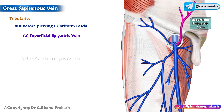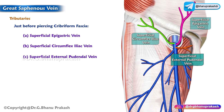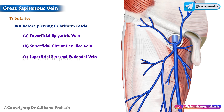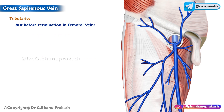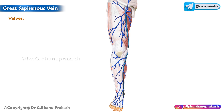Just before the long saphenous vein pierces the cribriform fascia, it receives the following tributaries: the superficial epigastric vein, the superficial circumflex iliac vein, and the superficial external pudendal vein. These veins accompany the corresponding superficial branches of the femoral artery. Just before the termination into the femoral vein, the deep external pudendal vein drains blood into the femoral vein and is considered the last tributary of the long saphenous vein.